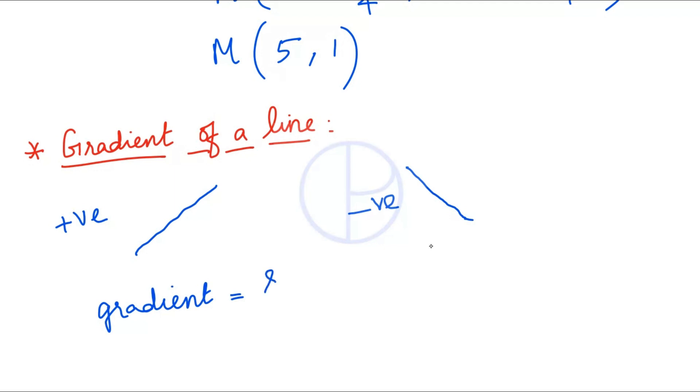The gradient is rise over run — that is, the change in the y-value divided by the change in the x-value.